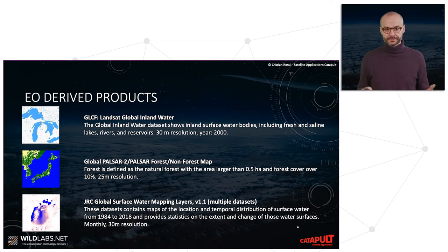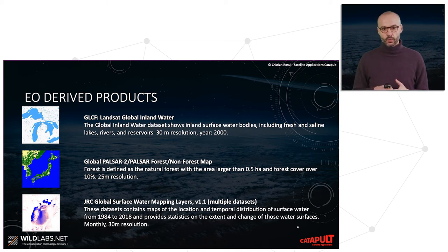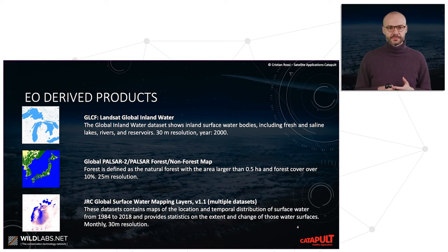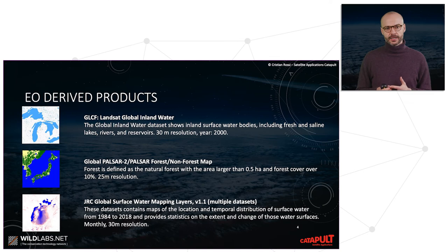For water, there is a similar product — Landsat Global Inland Water — which describes surface water bodies. For forest and non-forest mapping, data from PALSAR-2 — a SAR type sensor — is used to produce a forest/non-forest map.